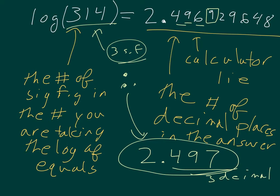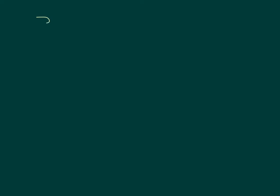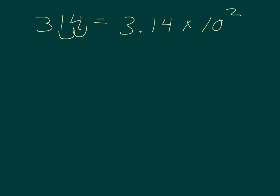I think this sig fig rule is actually one of the easier ones to understand. If you don't want to memorize it, you can also understand it. Let's take a look at the logic. If we write 314 in scientific notation — we move our decimal over two places — so it would be 3.14 times 10 to the 2.